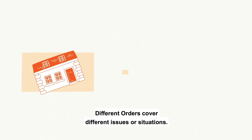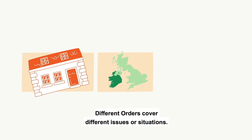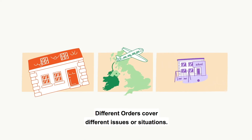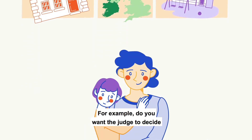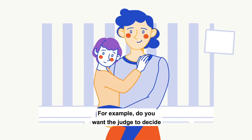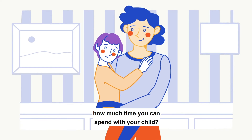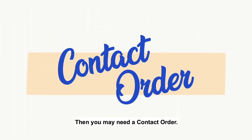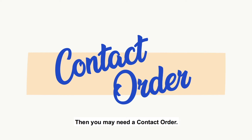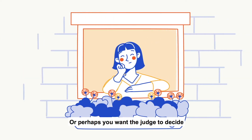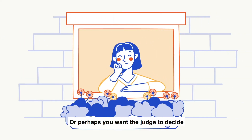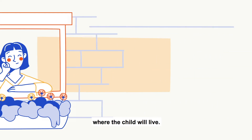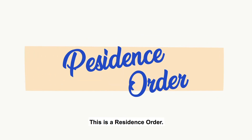Different orders cover different issues or situations. For example, do you want the judge to decide how much time you can spend with your child? Then you may need a contact order. Or perhaps you want the judge to decide where the child will live. This is a residence order.